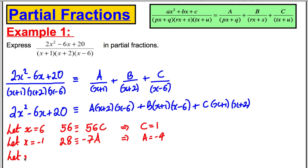And lastly we would let x be equal to negative 2. If we let x be equal to negative 2, this side we would get 40. This would disappear, this would disappear. We'd get B times negative 1 times negative 8, which would be 8, just 8B. Therefore B would be equal to 40 divided by 8, which is 5.